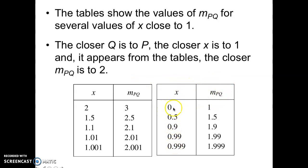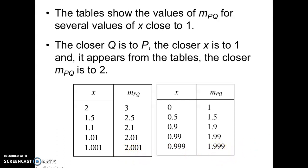Here, Q is points coming in from the left. Say Q is at 0, so the slope between 0 and 1 was 1; between 0.5 and 1, the slope was 1.5; between 0.9 and 1, the slope was 1.9; 0.99 and 1 gives 1.99. Notice the slope between the two points as Q gets closer and closer to P also targets a slope of 2. Just like with limits, if my slopes are targeting the same value, then we say the instantaneous rate of change exists, or the derivative exists, or the slope of the curve exists — all synonymous — and is equal to that point, in this case a value of 2.